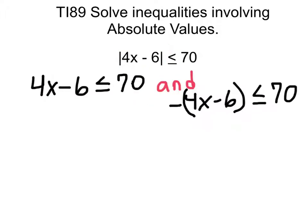The next step is to take away those inequality signs and solve for two inequalities. The first one: 4x minus 6 is less than or equal to 70. And the second one: we replace the inequality signs with a negative and brackets, so negative (4x minus 6) is less than or equal to 70.